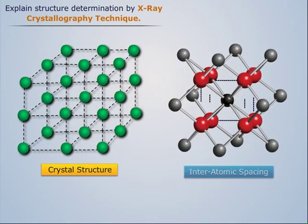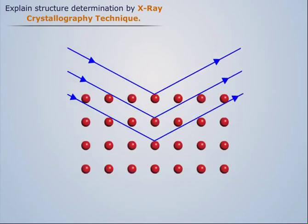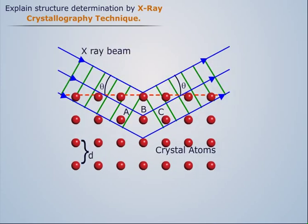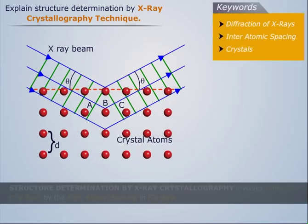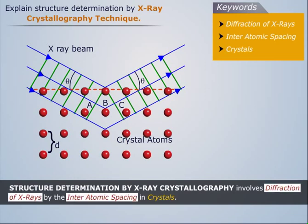The interatomic spacing in crystals is 2 to 3 angstroms. Thus, X-rays are diffracted by crystals since they have the wavelength in this range. Therefore, structure determination by X-ray crystallography involves diffraction of X-rays by the interatomic spacing in crystals.